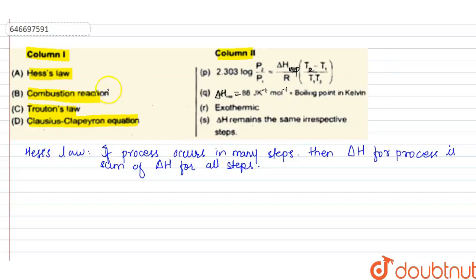So Hess's law matches with S, i.e., Delta H remains same irrespective of the steps. So A is S.